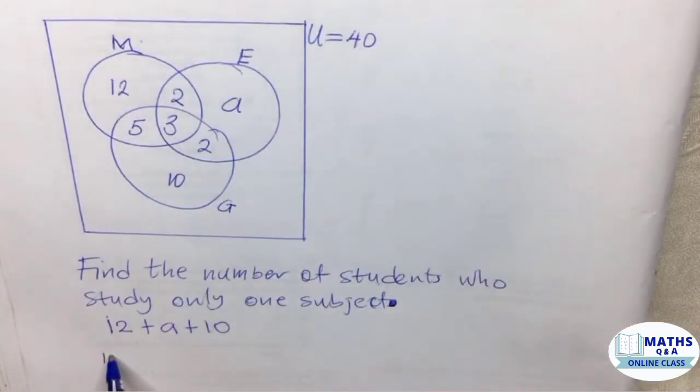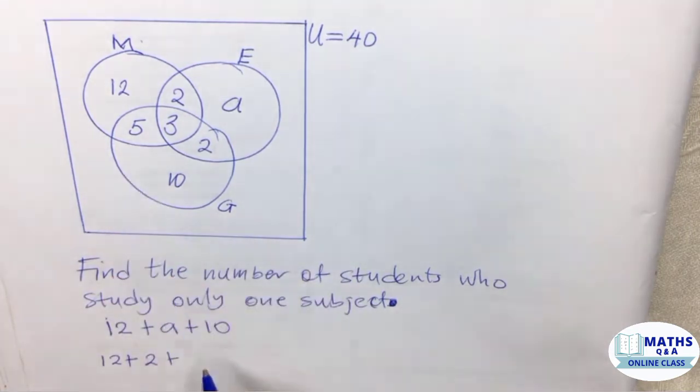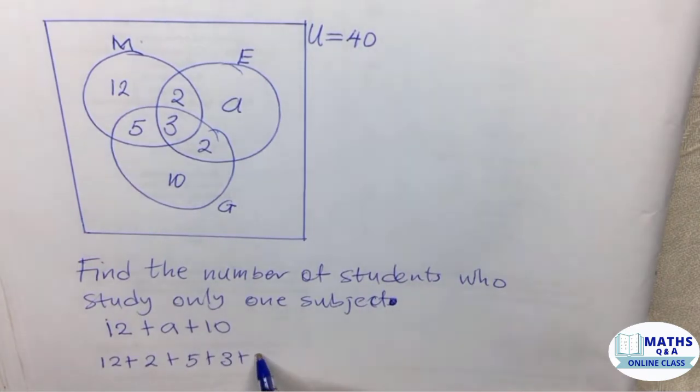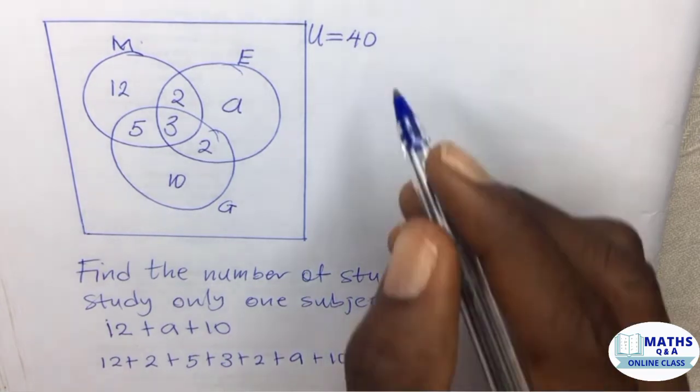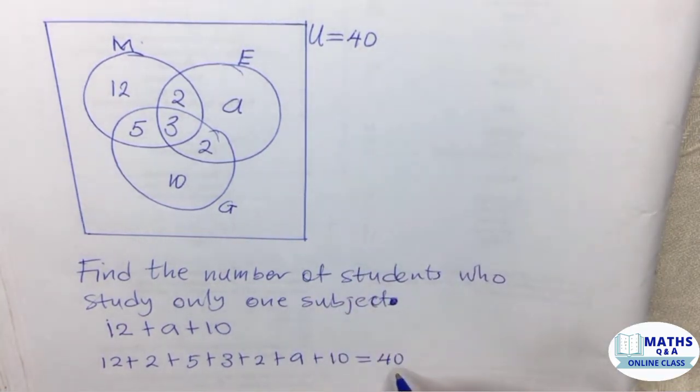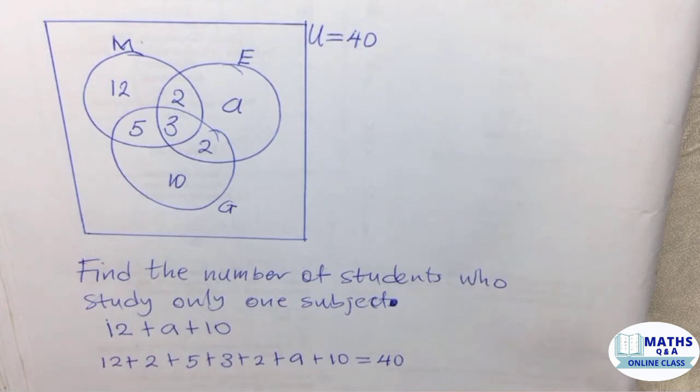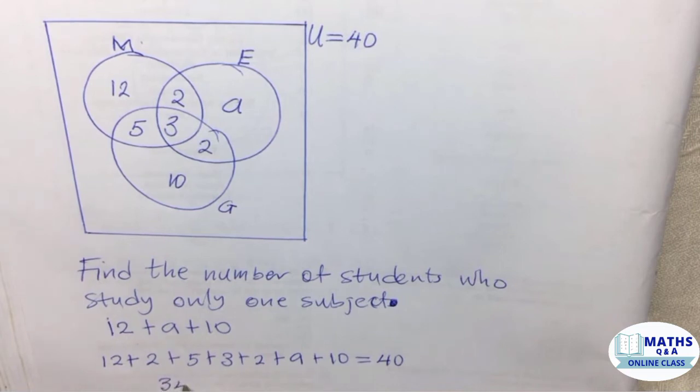We have 12, we have 2, we have 5, we have 3, we have 2, we have a, we have 10. All the regions have been taken care of. Then we equate it to the universal set, which is 40. Let's sum everything up. We're going to get 34, the variable a comes in, and we equate it to 40.